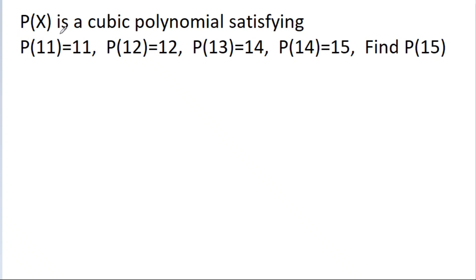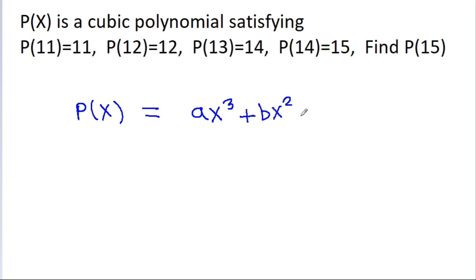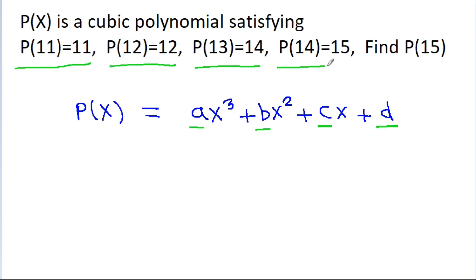In this video, we have given that p(x) is a cubic polynomial satisfying p(11)=11, p(12)=12, p(13)=14, and p(14)=15, and we have to find the value of p(15). We have given that p(x) is a cubic polynomial and the general form is p(x) = ax³ + bx² + cx + d. So we have four variables a, b, c, and d, and we can make four equations. By using those four equations we can find a, b, c, d and then easily find p(15).